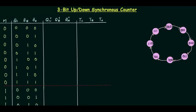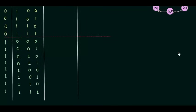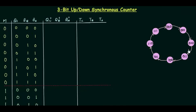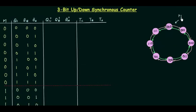For down counting, the control input M is 1. We have 8 possible cases. Starting from 1-1-1 which is 7, for each passing clock pulse the value decreases: 7, 6, 5, 4, 3, 2, 1, 0, and back to 7. So when M equals 0 we have an up counter, and when M equals 1 we have a down counter.